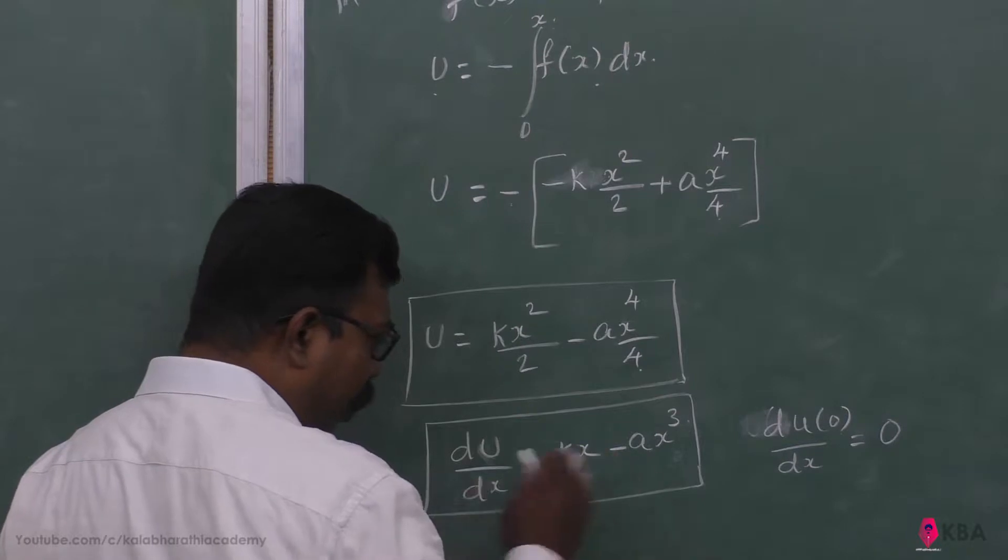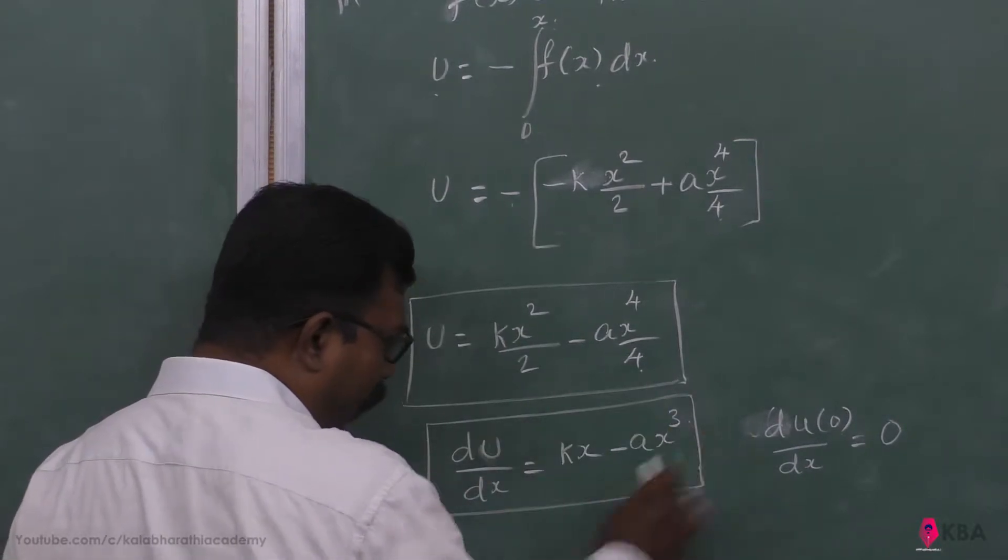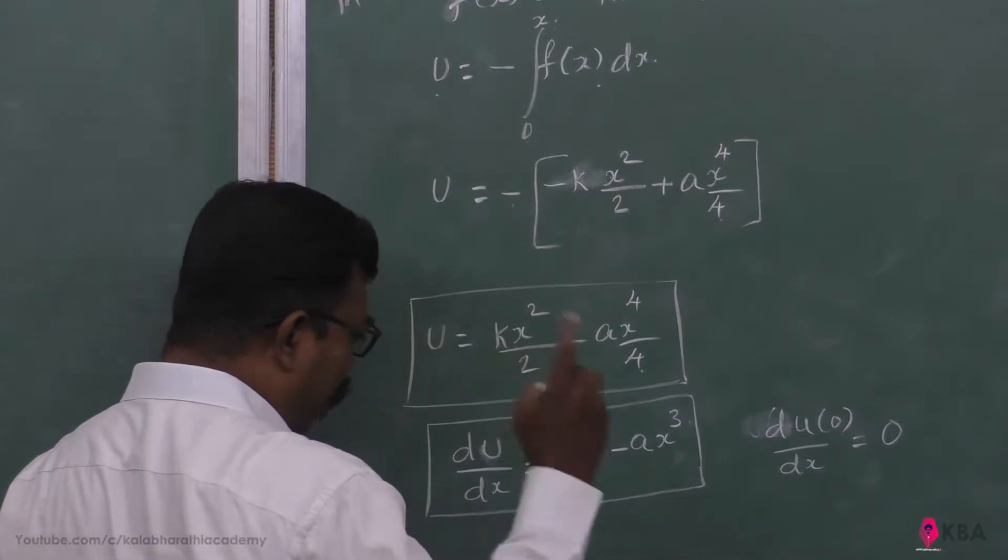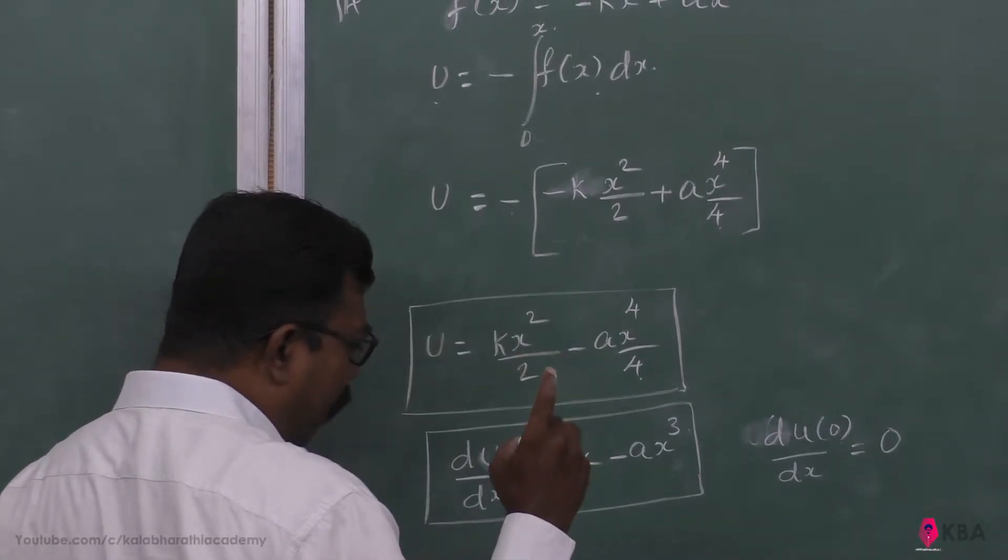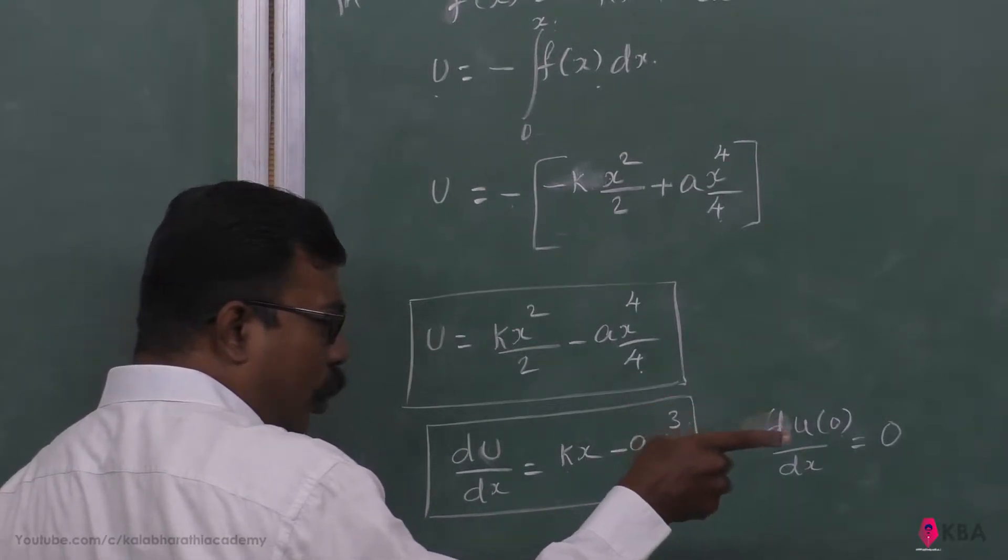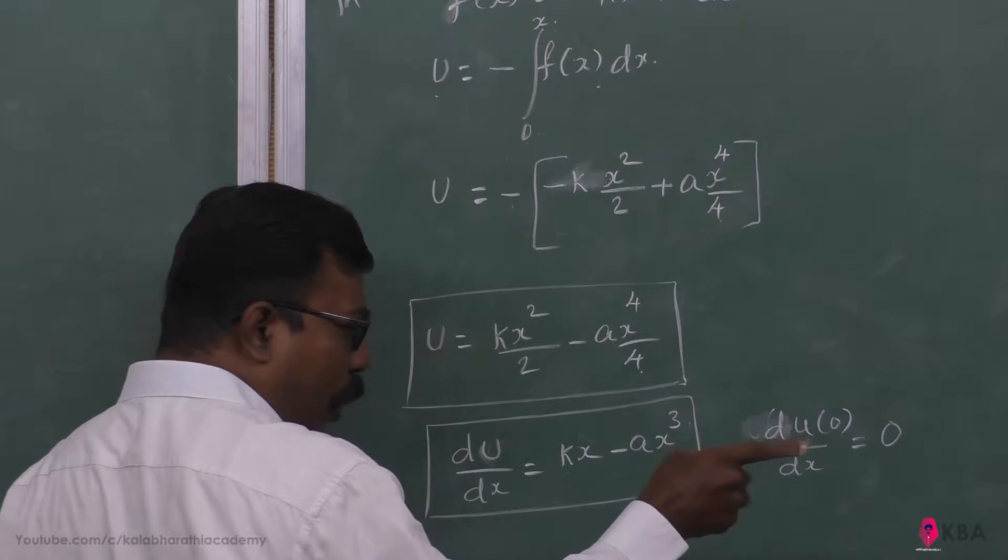When we differentiate, we get kx minus a times x³. This is the rate of change of energy. When x is zero, the function becomes zero, so the first clue is that at x equals 0, the slope must be 0.